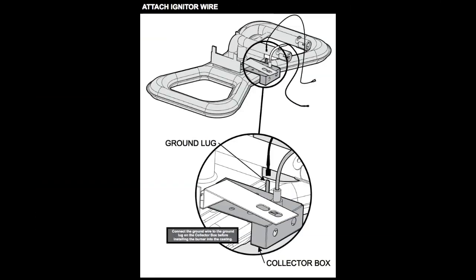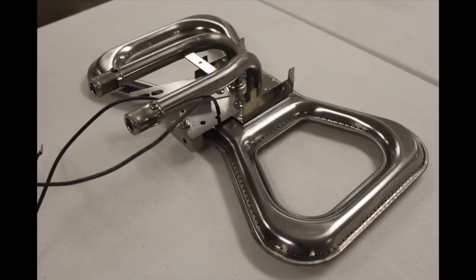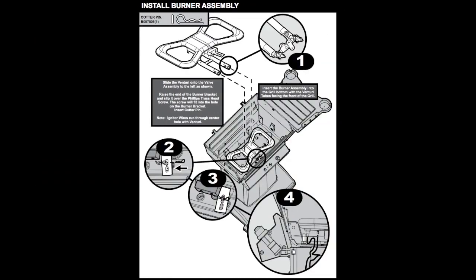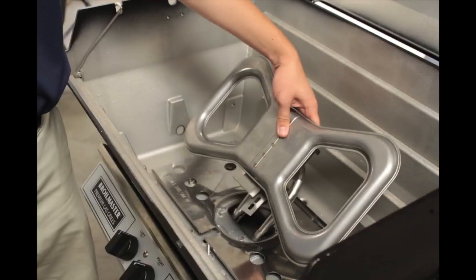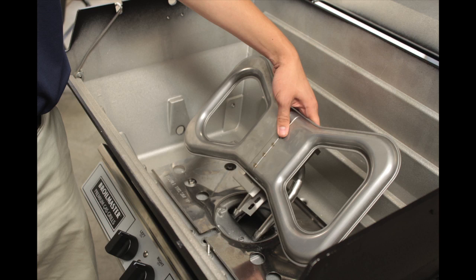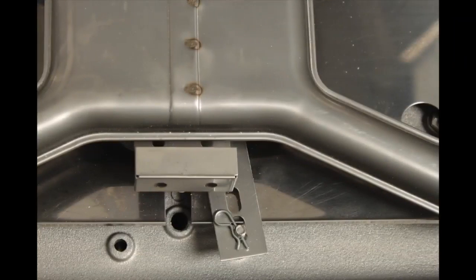Attach the igniter grounding wire to the burner. Bend up the burner hold down tab slightly and then insert the burner into the grill, making sure the igniter wires route through the square hole without getting pinched. Bend down the burner hold down tab onto the screw and insert the pin.